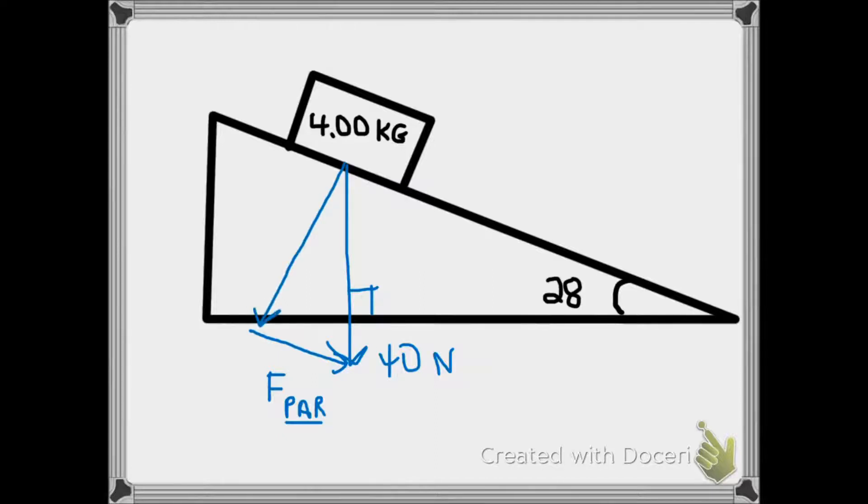And I'm going to break it into another component going perpendicular to the plane. Those two component forces together equal the weight of the box, which is 40 newtons. Now if I look at the 28 degree angle and the 90 degree angle, that makes a 62 degree angle for the third angle of that triangle. And because this is also a bisector or a 90 degree angle, that means this angle has to be 28 degrees also.